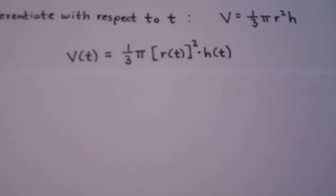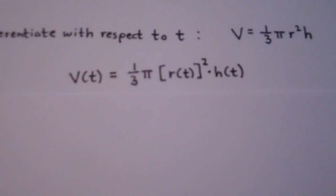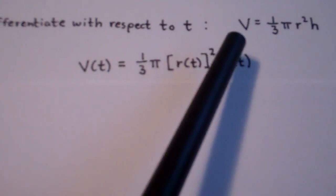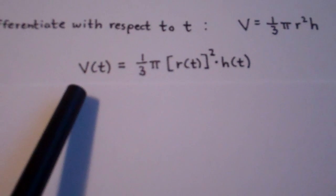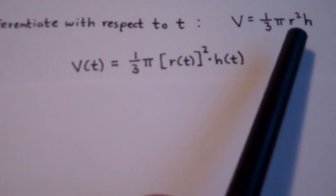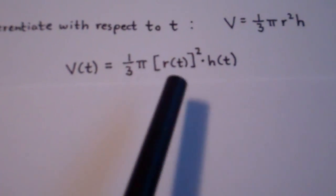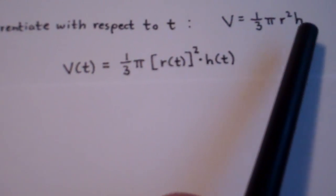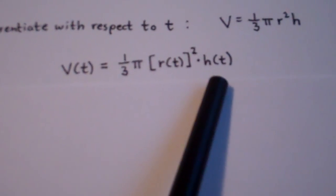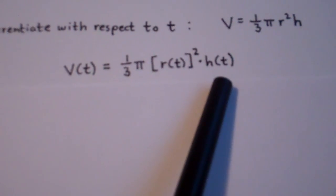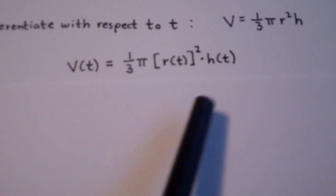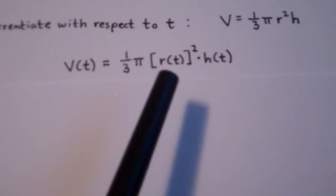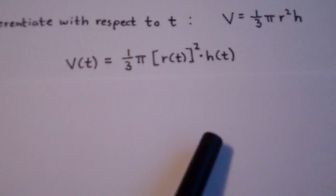So all I did was just rewrite all of the variables as functions of t. Rather than v, I write v of t; rather than just r, I write r of t; and rather than just h, I write h of t. So now that we have every variable written as though it's a function of t, we take the derivative the way we normally would.